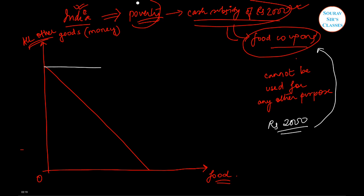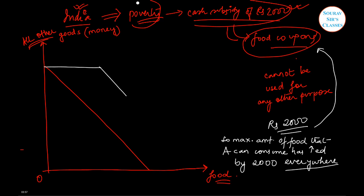We will have something like this. This actually means that the maximum amount of food that consumer A can consume has increased by 2000 everywhere, because 2000 is the amount of cash subsidy which has to be utilized only on food. So we will have a budget line like this, and this point on the horizontal axis accounts for food equal to 2000, so we get a kink here.